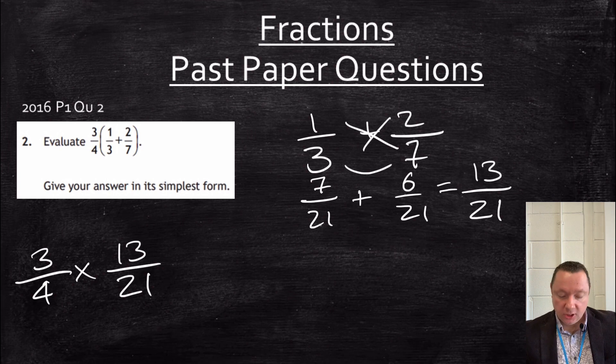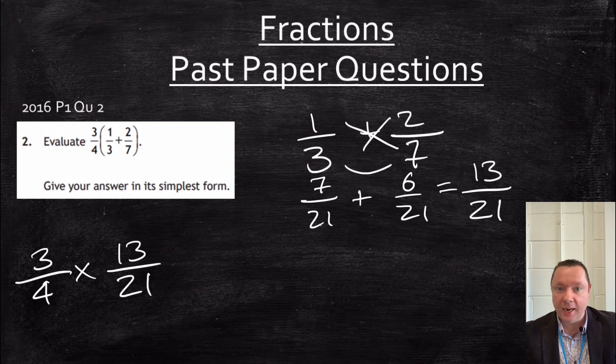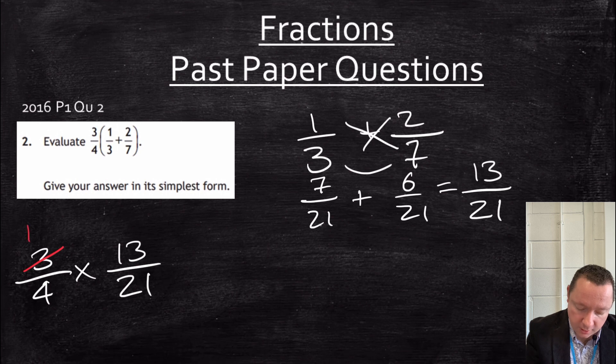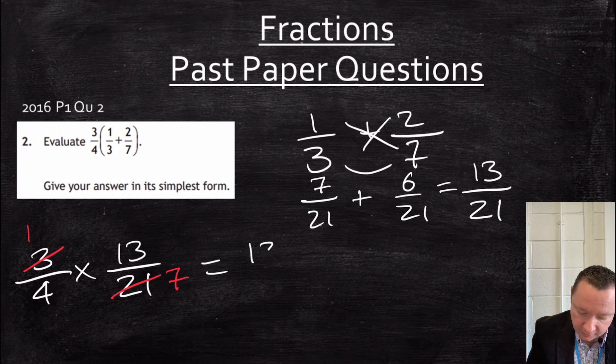Now, at this stage, you can simplify after you do the times or before. You can always simplify with a times, but you can't do it with an add for fractions. So here we go. We can simplify by dividing by three to get one. Divide by three to get seven. Now the sum becomes a lot easier.